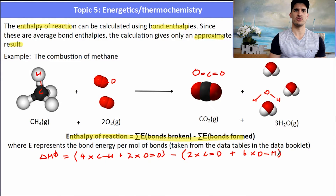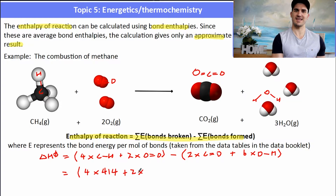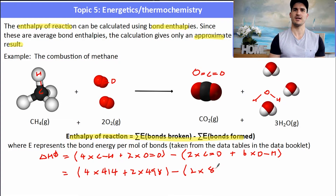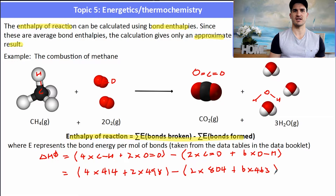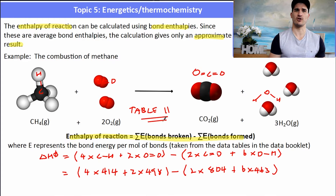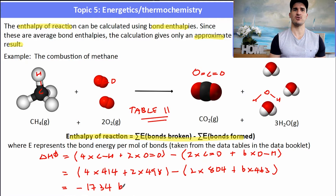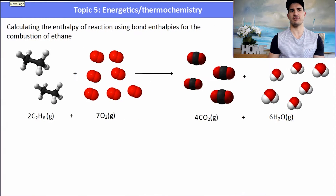Referring to the data book table, we get: (4 × 414) + (2 × 498) for bonds broken, minus the bond enthalpies for bonds formed. Setting this out clearly and entering it straight into your calculator will minimize errors. The result for the combustion of methane is −1734 kJ/mol.